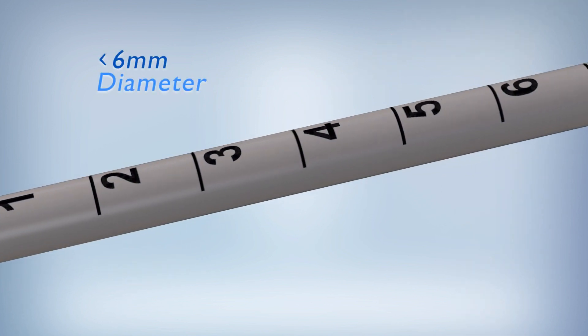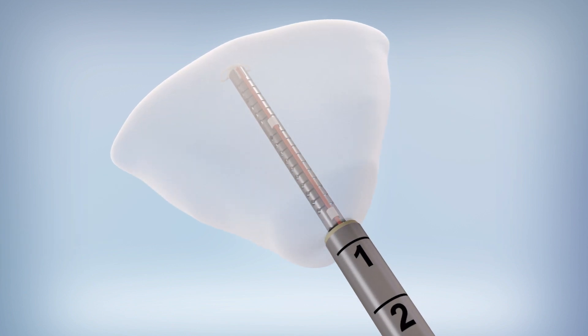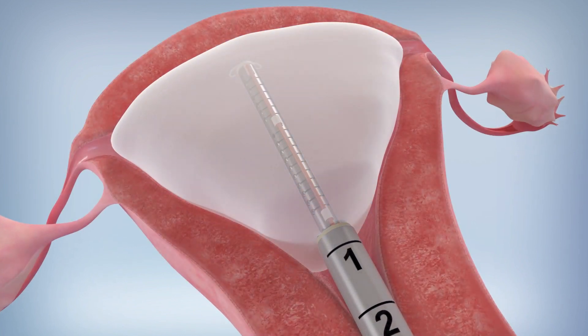The slim probe makes insertion of the Serene Device more comfortable. The thin, flexible liner conforms to each unique uterine cavity.